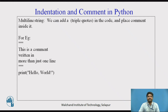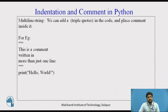For a multiline string, you can add triple quotes in the code and place the comment inside it. Use triple quotes at the beginning and at the end of the statement. Everything inside will be ignored and treated as a comment, so the only output will be hello world.